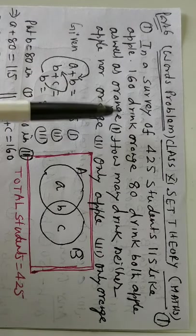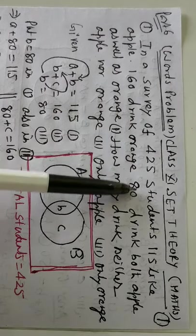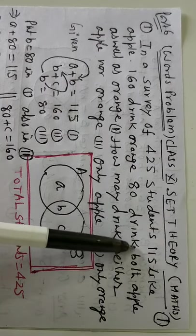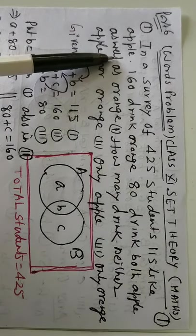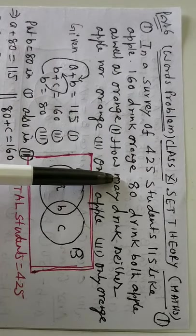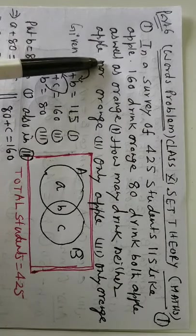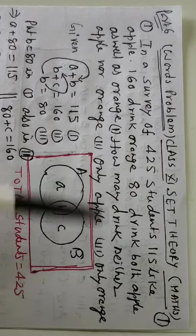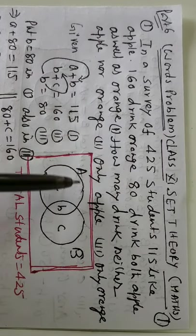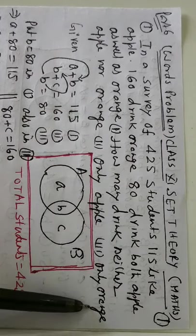This is the word problem. In a survey of 425 students, 115 like apple, 160 like orange, 80 like both apple as well as orange. How many drink neither apple nor orange? Only apple, only orange.